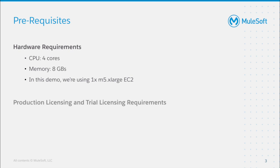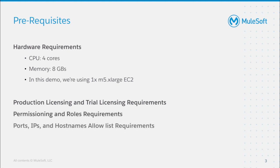You'll also need to consider production licensing and trial licensing requirements, permissioning and roles requirements, ports, IPs, and hostname allow list requirements. And finally, you'll need to be able to download, install, and configure Istio. More information on these requirements can be found at the link below this video.